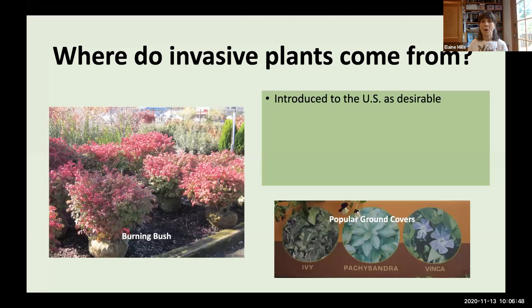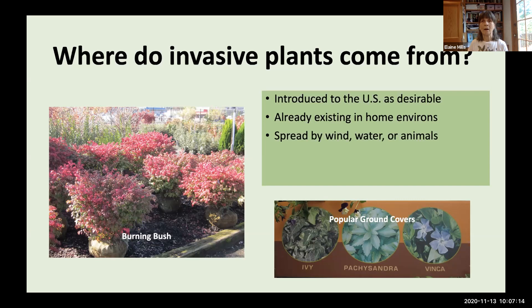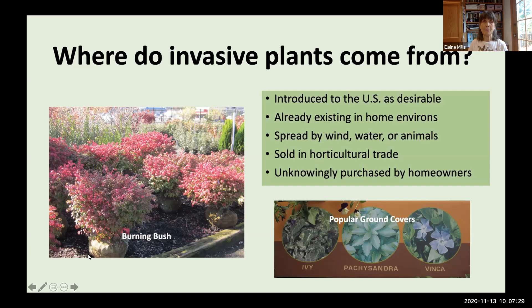Where do invasive plants come from? Many were introduced to the United States as desirable plants, mostly from Europe or Asia, some as long ago as with the early colonists. They can be spread by wind, water, or animals carrying seeds. Unfortunately, a good number are still sold in the horticulture trade and unknowingly purchased by homeowners — examples include burning bush at a local nursery and popular groundcovers like English Ivy and Vinca at box stores.